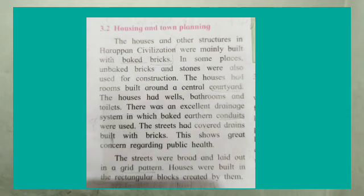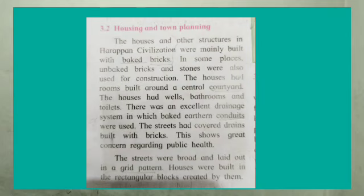Their houses had rooms built around a central courtyard, with walls, bathrooms, and toilets. There was an excellent drainage system in which baked earthen conduits were used — a conduit is a pipe or channel for conveying water. In that period, the people were very careful about their health and had a proper drainage system. The streets had covered drainage built with bricks, showing great concern for public health.